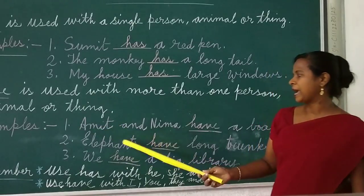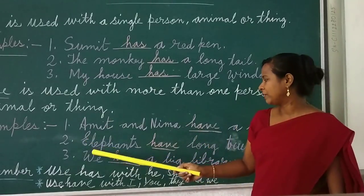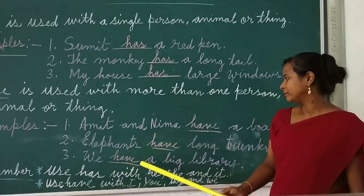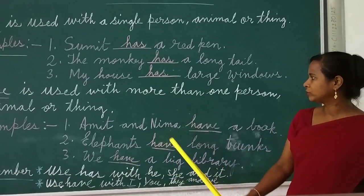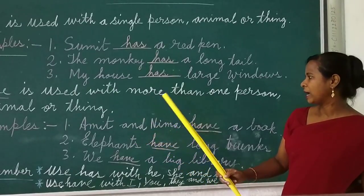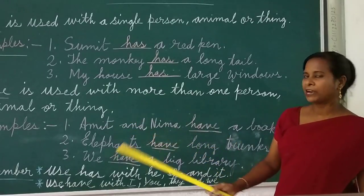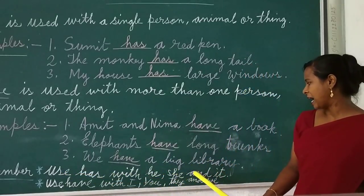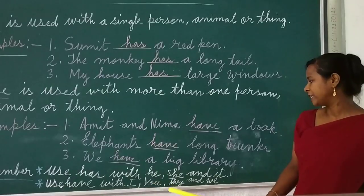Amit and Neema have a book. Elephants have long trunks. We have a big library. So here we are talking about more than one person, thing, or animal — so we use 'have'. Remember: use 'has' with he, she, and it. Use 'have' with I, you, they, and we.